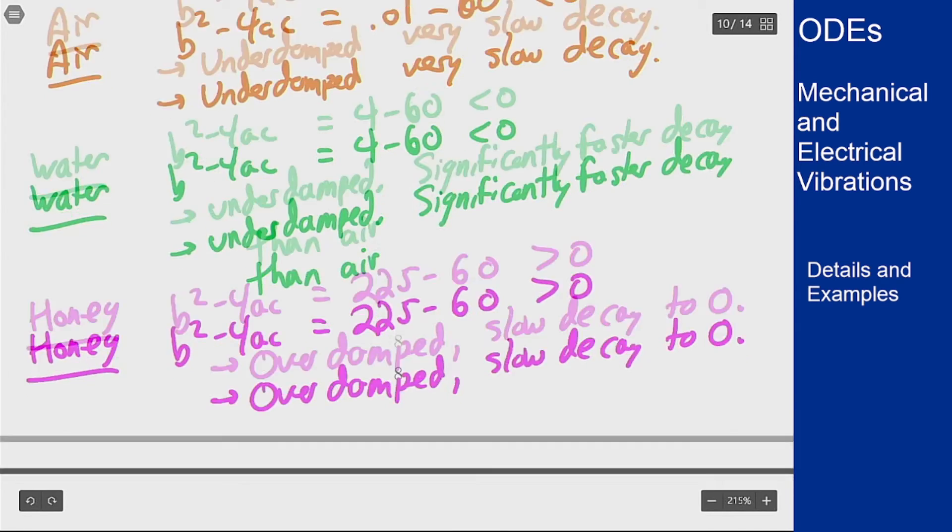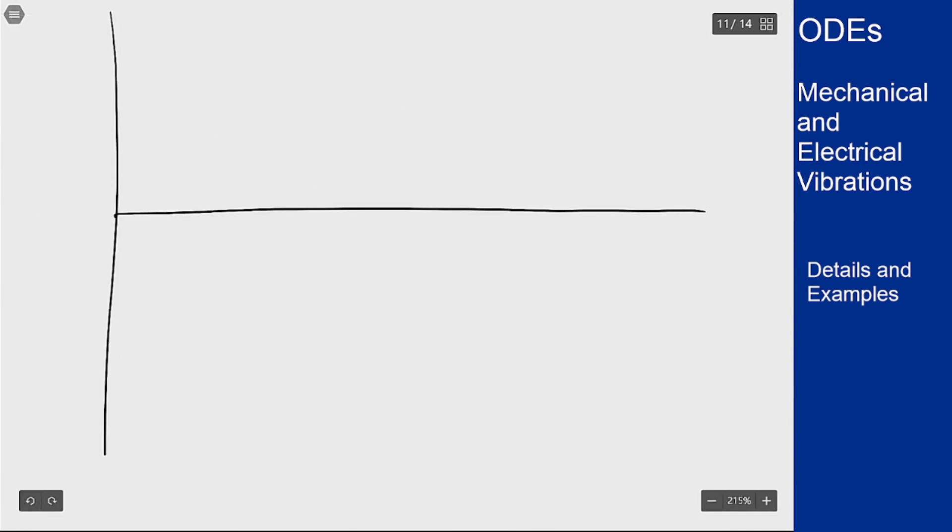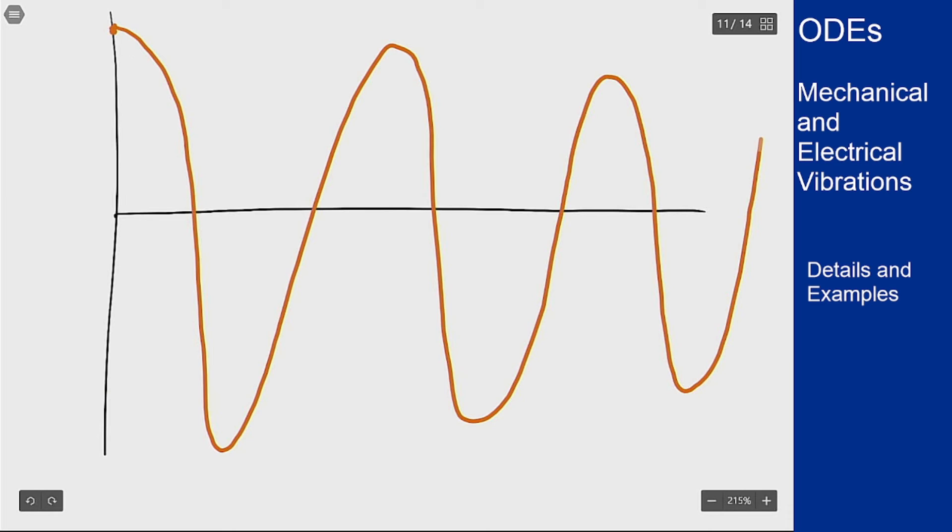For the air, I think we'll start up here. It's going to oscillate at a pretty good clip and it's going to decay very, very slowly as it goes out. It'll decay eventually and eventually go away, but it's going to do so very slowly.